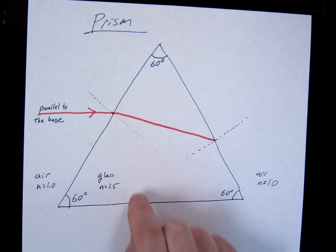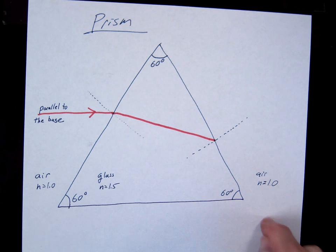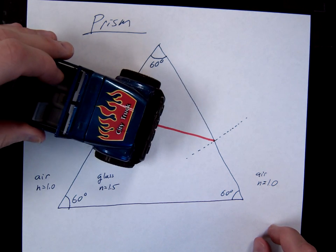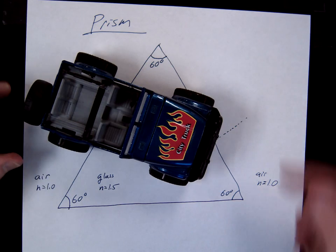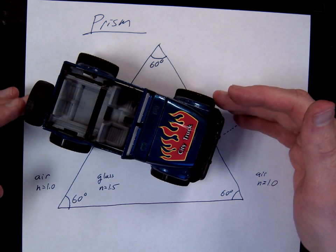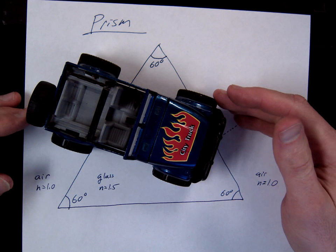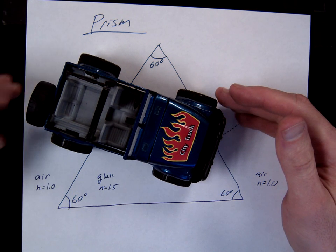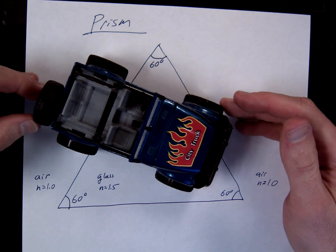Alright, this time we're in glass so we're going slow. We're going to go into air so we're going to get faster. So I take my car. I'm going slow, slow, slow. Notice the left side hits the air first. So this side hits the air, it's going to speed up. So the car is going to turn again to the right.